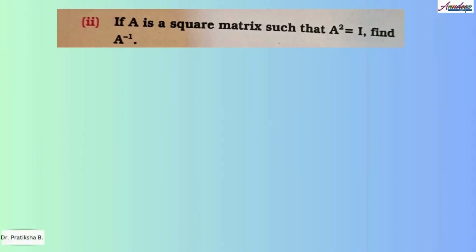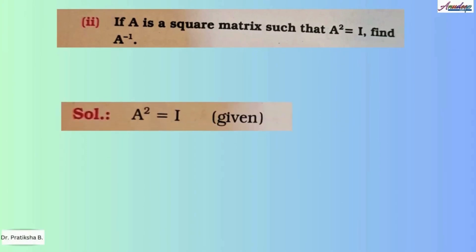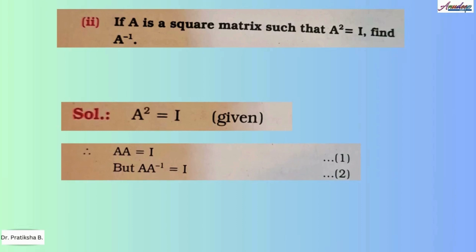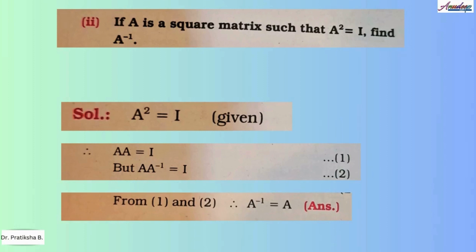Now let us solve the second problem. Here A is a square matrix such that A² equals I (the identity matrix), and you have to find A inverse. Since A² can be written as A × A, we write A × A = I. We also know that A × A inverse = I. Equating both equations since the right-hand sides are the same, we get A inverse is equal to A.